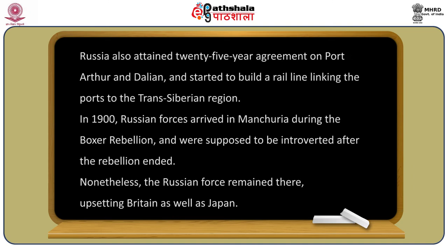The history of the 1902 alliance began in the late 19th century when Russia took advantage of Japan's retreat in 1895 to advance its goals in the Far East. Russia concluded a secret treaty with China to build part of the Trans-Siberian Railway across Manchuria. Russia also attained a 25-year agreement on Port Arthur and Dalian, and started building a rail line linking the ports to the Trans-Siberian region.